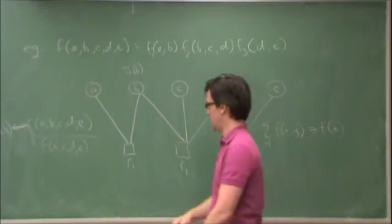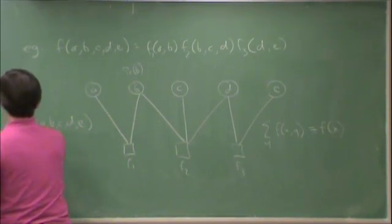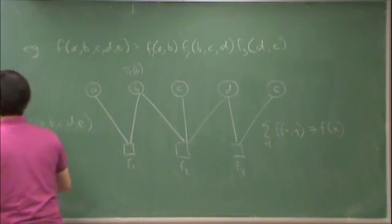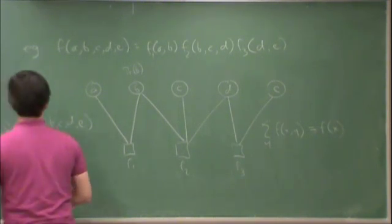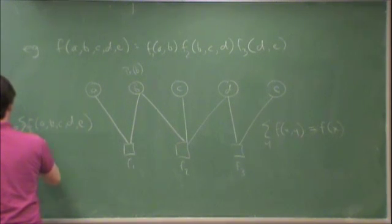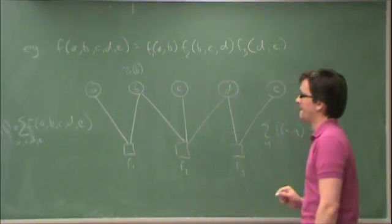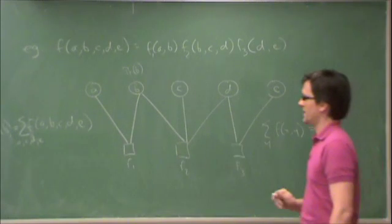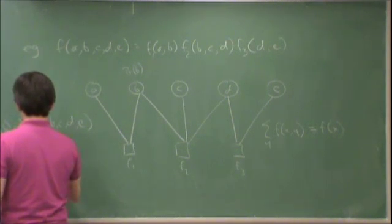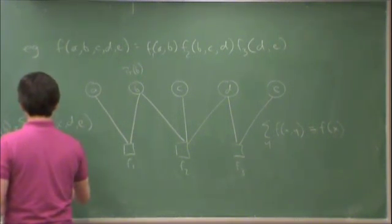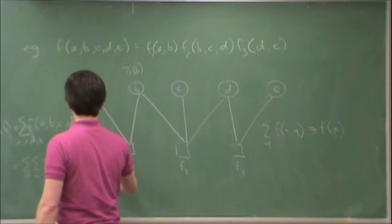So I want to get rid of everything that I don't know except B. Probability of B is equal to sum of this model over A, C, D, and E. In fact, let's write that as sum over A, sum over C, sum over D, sum over E of F of A, B, C, D, E.